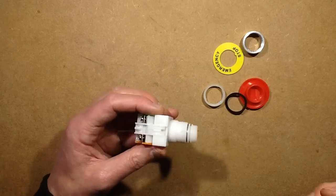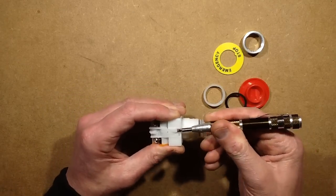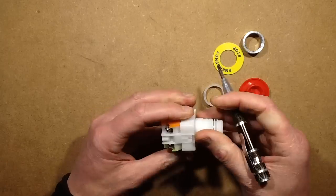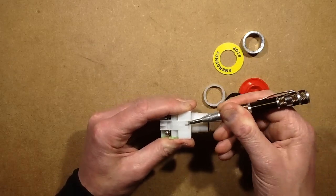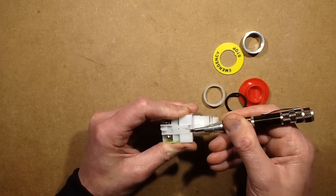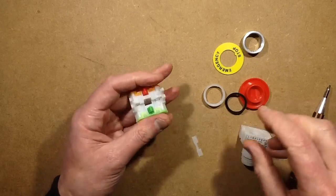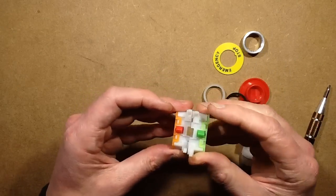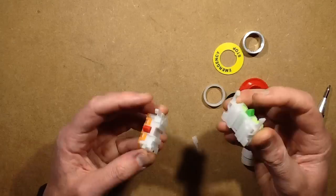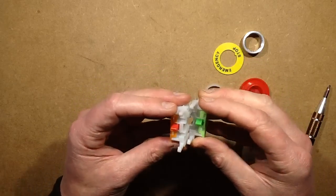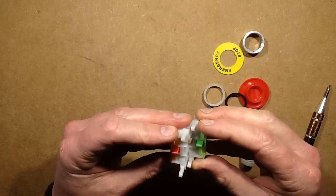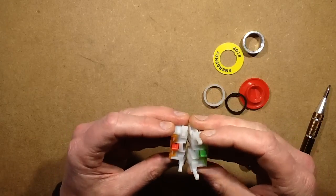Then at the back it's got the contact block, which can be unlocked from it. It's just a catch. And when that comes off these little shims also pop off. It's got the two modules - the normally closed and the normally open - and these just dovetail together.